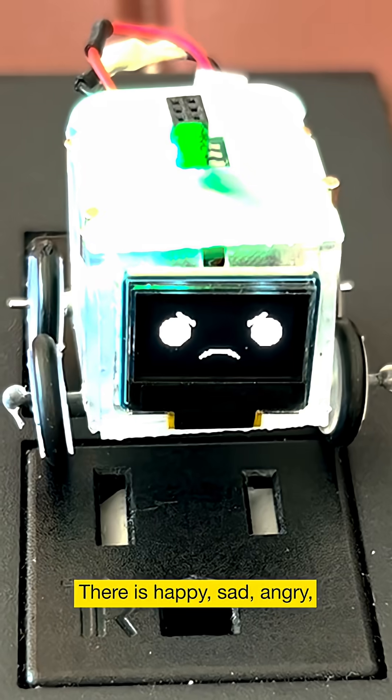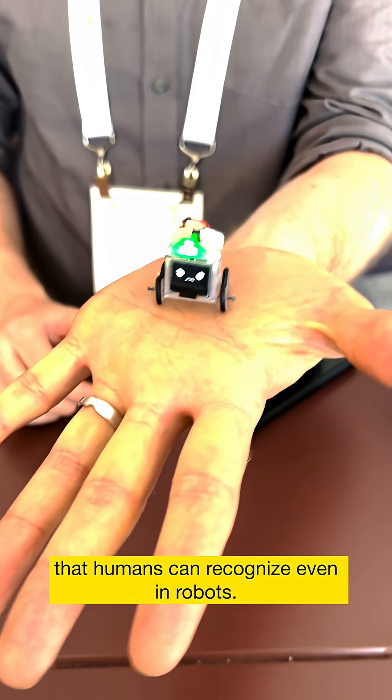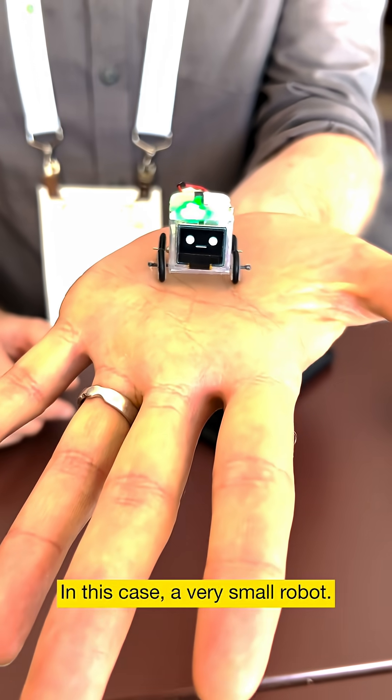There is happy, sad, angry, neutral, and surprised. These are universal emotions that humans can recognize even in robots, in this case, a very small robot.